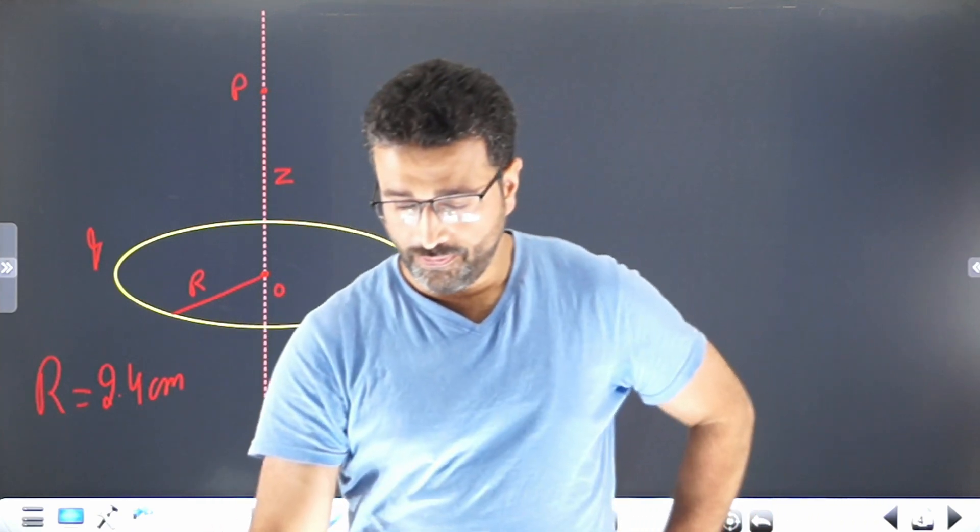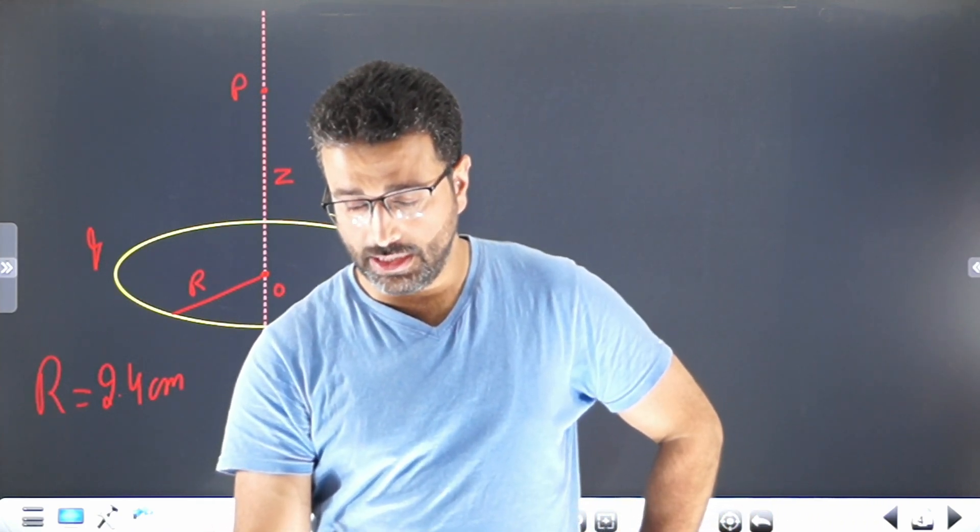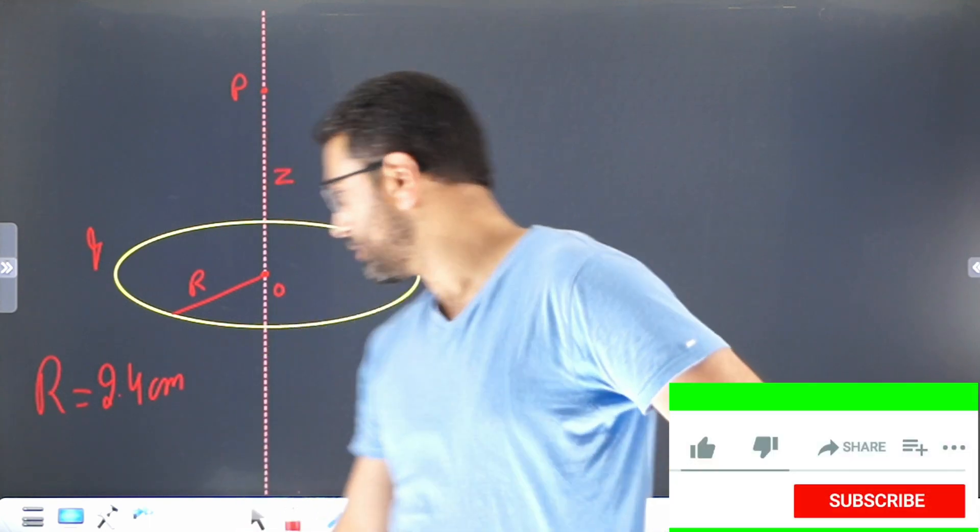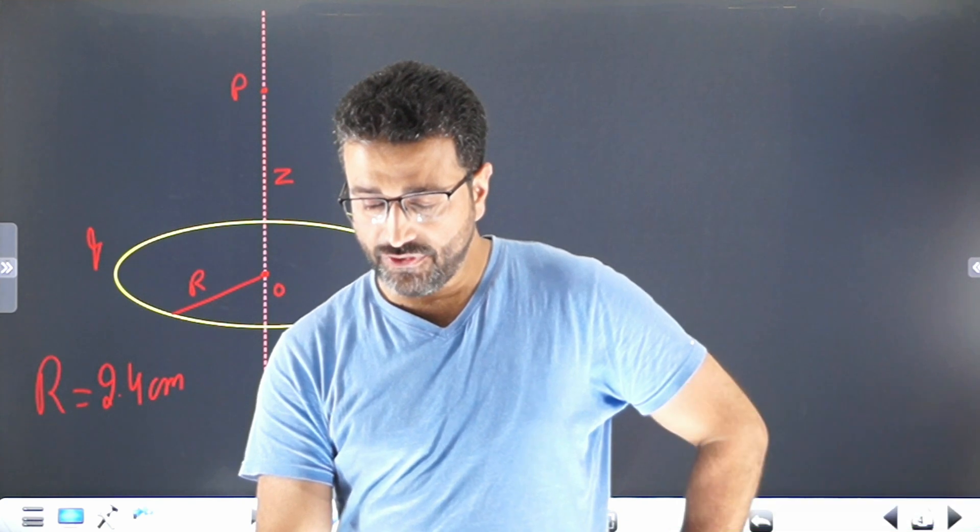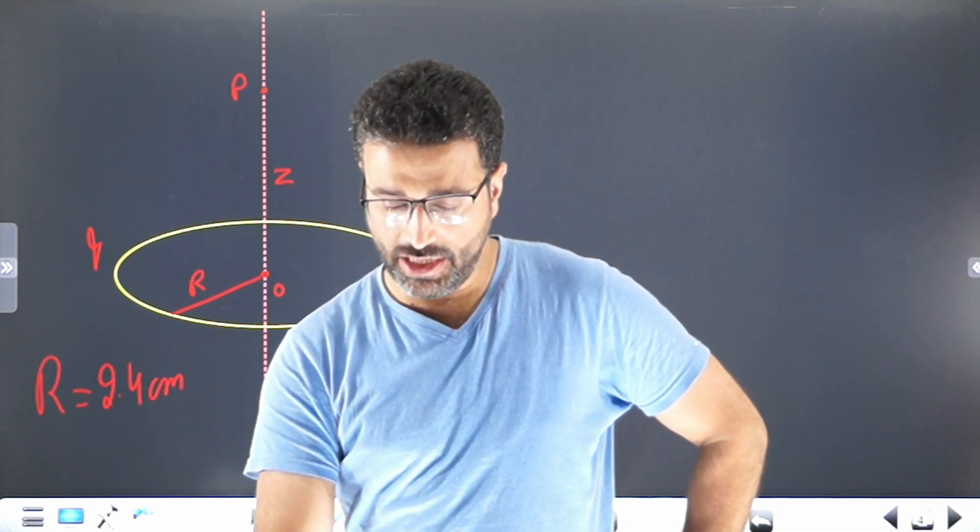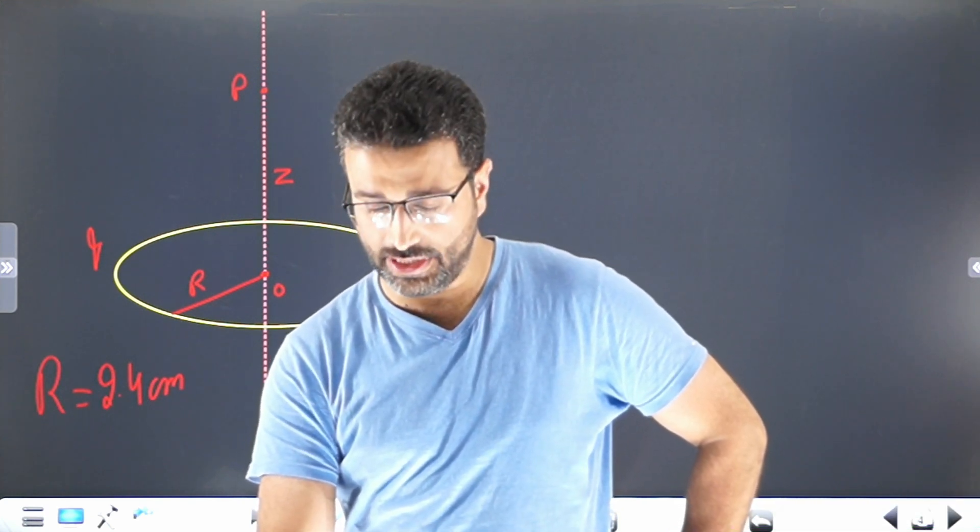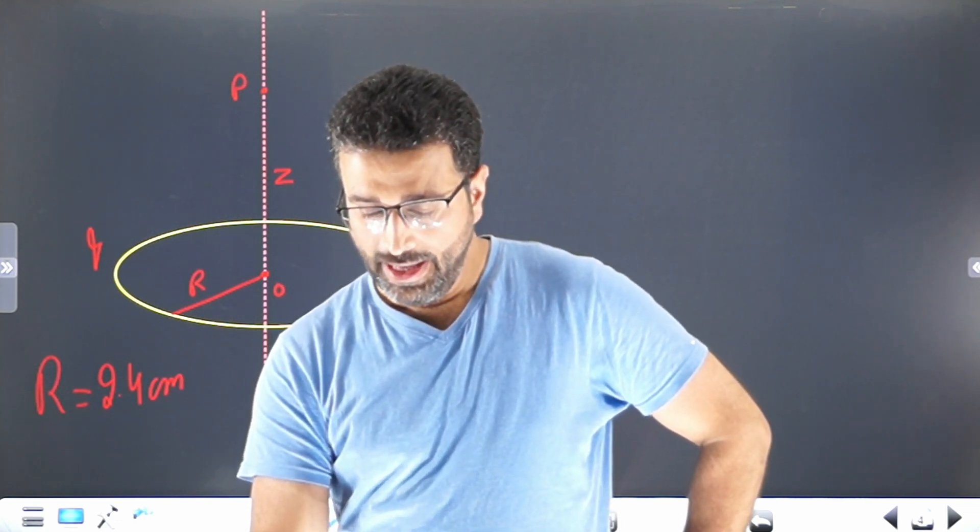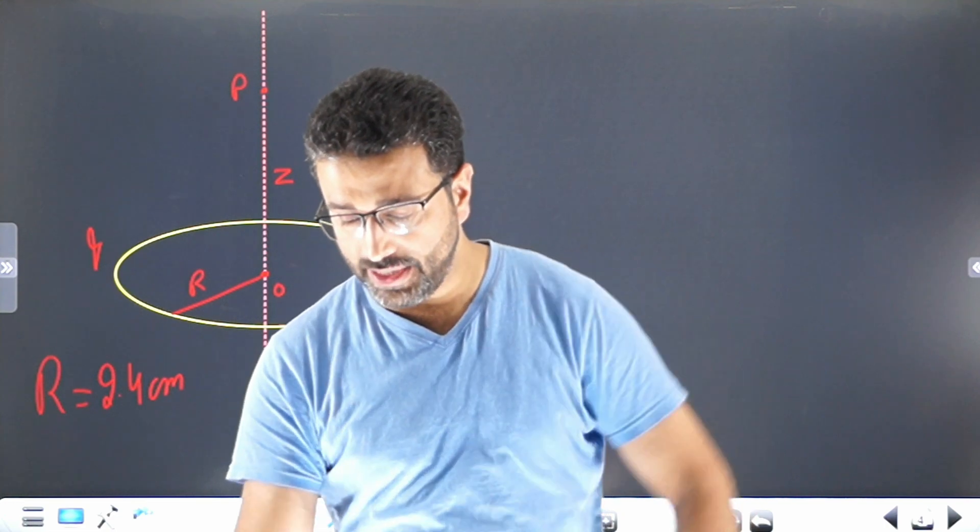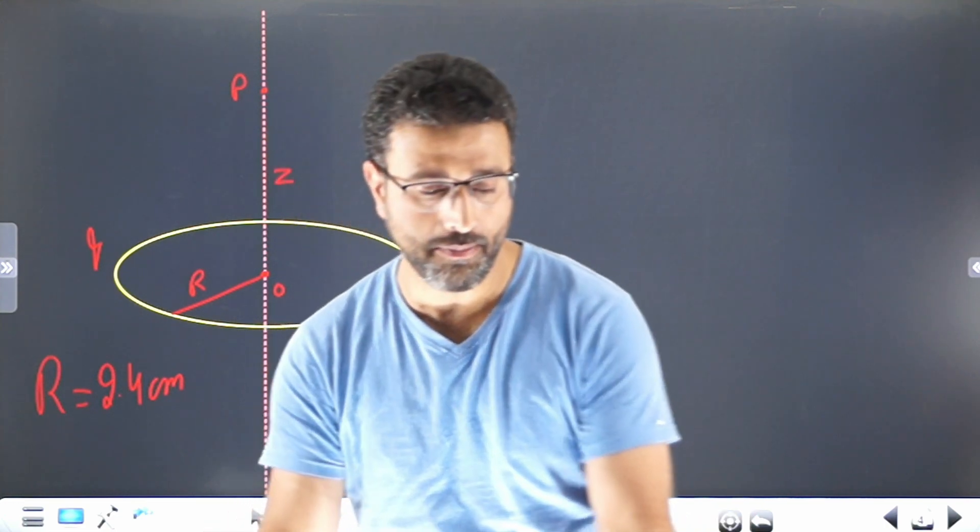The question says: charge is uniformly distributed along a ring of radius r equal to 2.4 centimeters and the resulting electric field E is measured along the ring's central axis perpendicular to the plane of the ring. At what distance from the ring center is E maximum?